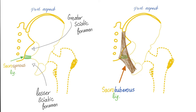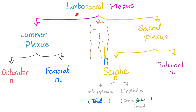Now let's talk about nerves. The lumbosacral plexus is made of the lumbar plexus and the sacral plexus. The lumbar plexus has two loyal sons: the obturator nerve — the nerve for the medial compartment of the thigh — and the femoral nerve — the nerve for the anterior compartment. The sacral plexus has two loyal daughters: the sciatic nerve and the pudendal nerve. The sciatic nerve is basically two nerves lumped together: the tibial and the common fibular. It passes below the piriformis muscle through the greater sciatic foramen, which is above the sacrospinous ligament.